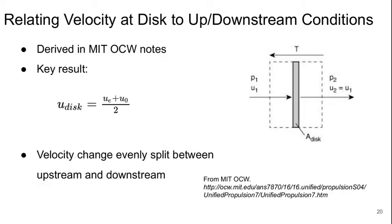Now, we still haven't figured out what the velocity at the disk is. We can relate it to the up and downstream flow conditions. I'm not going to go through the derivation here. The derivation is in the MIT OpenCourseWare notes, the address is here and also listed in the course syllabus.